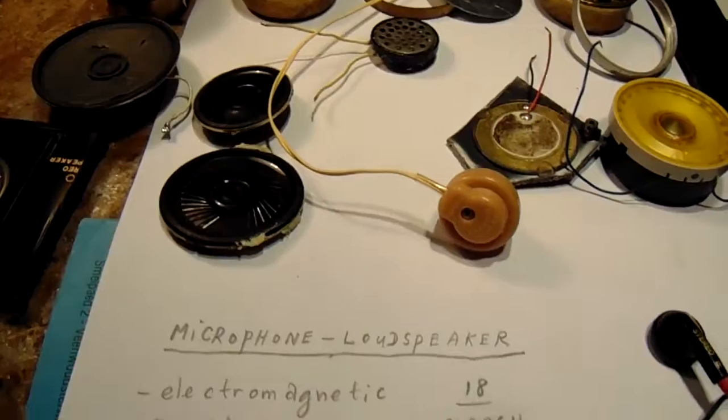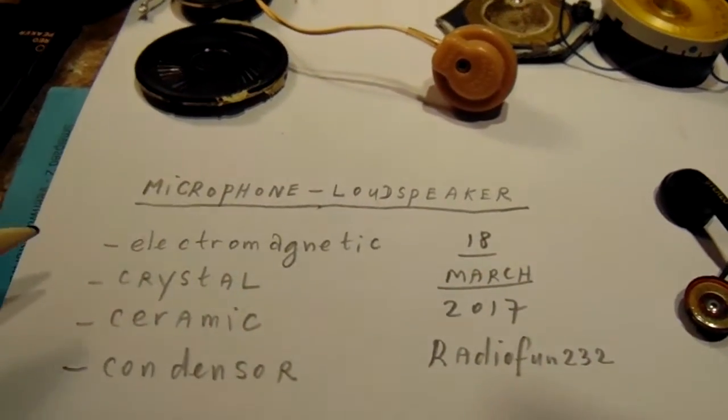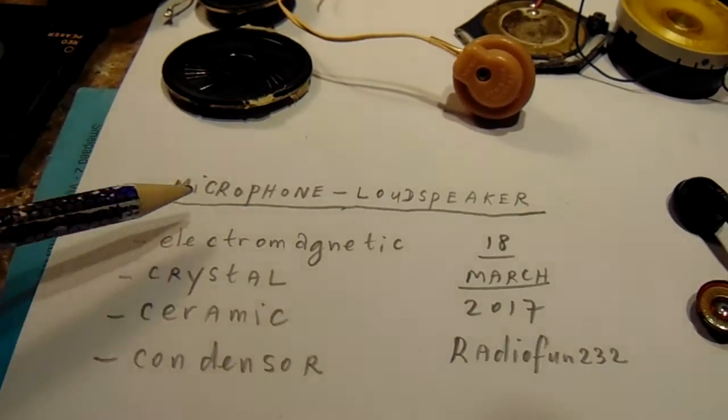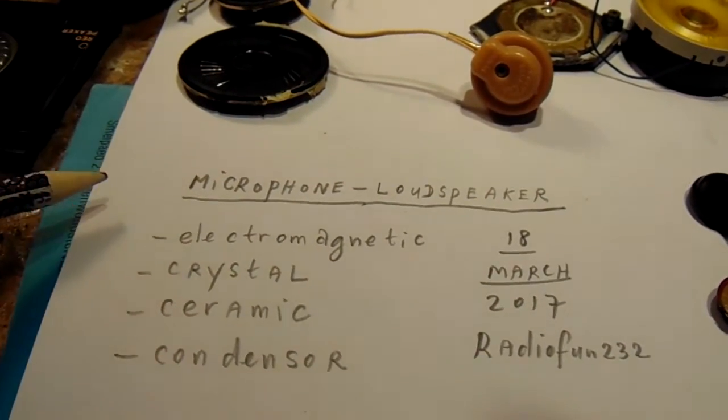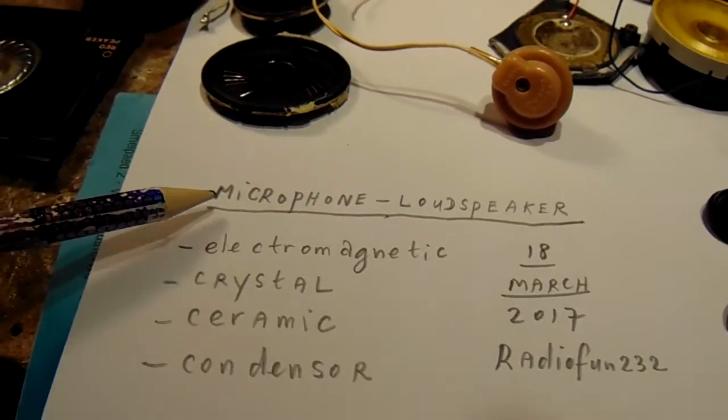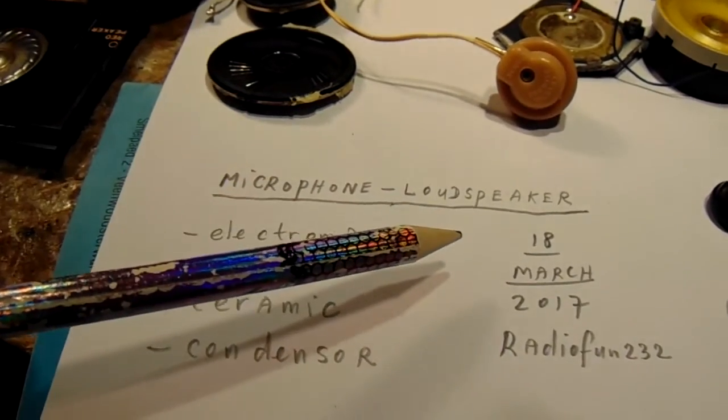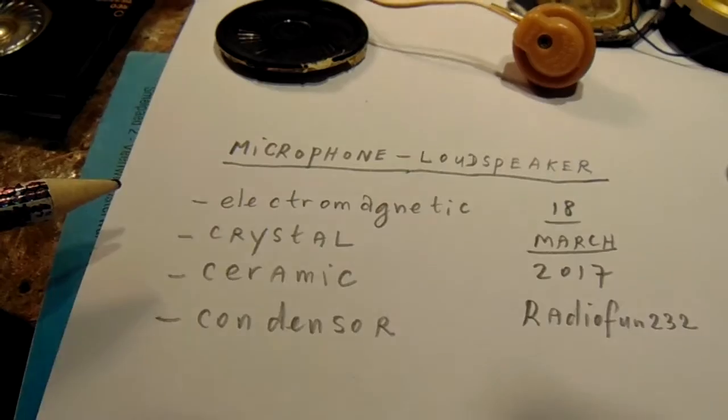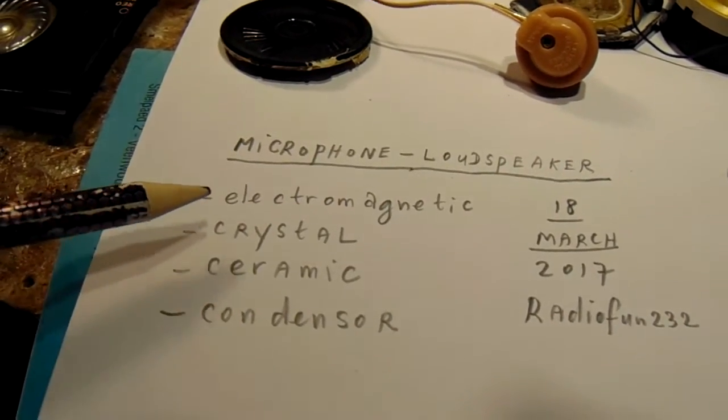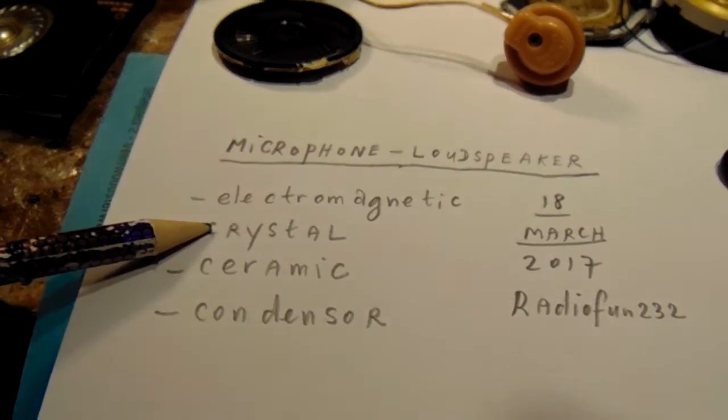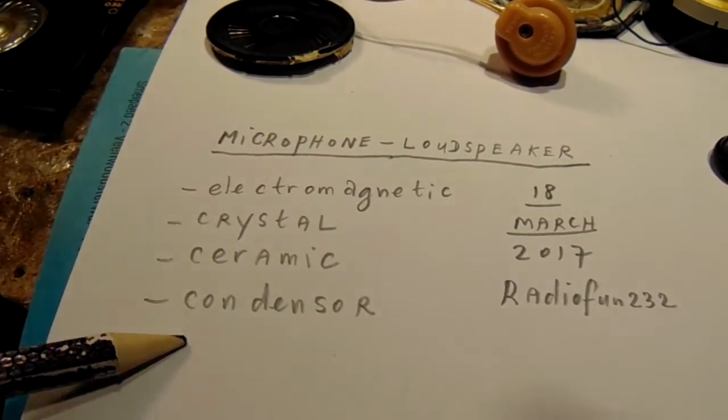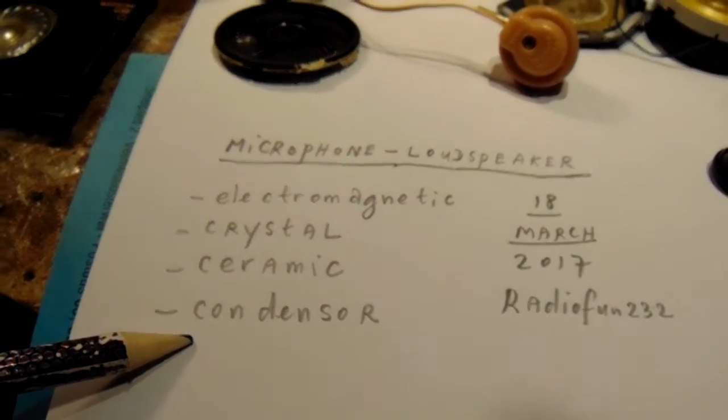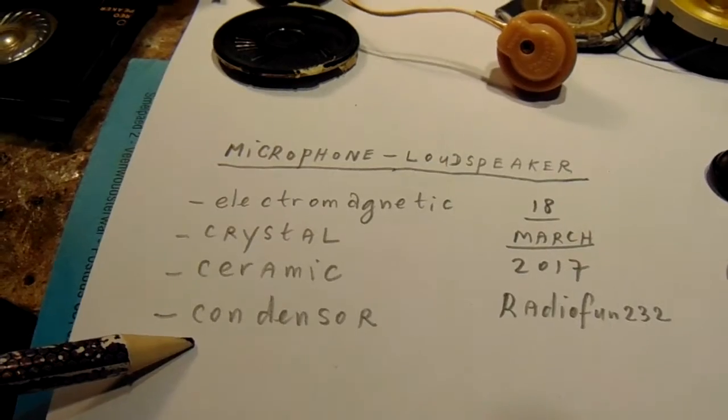Anyway, there are a few principles from microphones and loudspeakers that's important to tell. The microphone can be a loudspeaker and the loudspeaker can be a microphone. Sounds strange, but anyway, electromagnetic is one principle, crystal, ceramic, or a condenser microphone or loudspeaker.